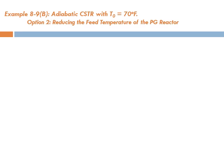Example 8.9b: adiabatic CSTR with T0 equals 70 degrees Fahrenheit. We go back to the original adiabatic operation from Example 8.8. However, now the feed is reduced to 70 degrees Fahrenheit instead of 75 degrees Fahrenheit - option 2: reducing the feed temperature of the propylene glycol reactor.